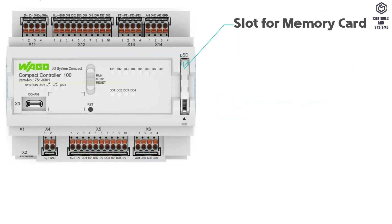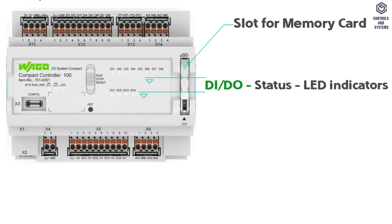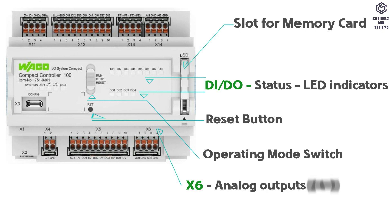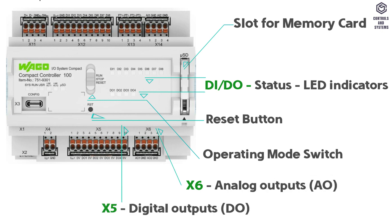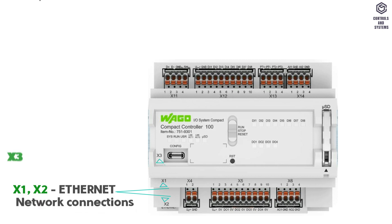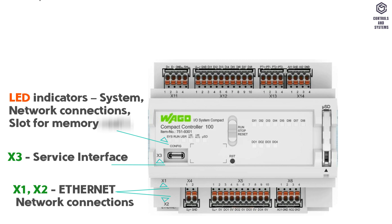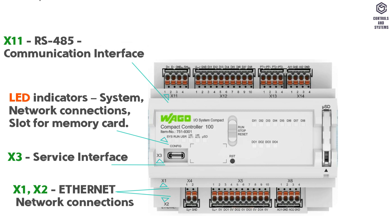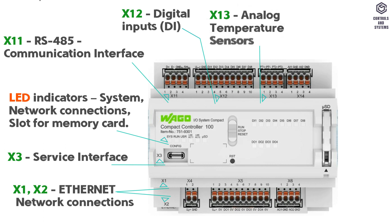Display and port layout: There is a slot for a memory card. Digital input and digital output status LED indicators are present, along with an operating mode switch and reset button. X6 is analog outputs. X5 is digital outputs. X4 is system supply voltage. X1 and X2 are Ethernet network connections. X3 is service interface. LED indicators are also present. X11 is RS-485 communication interface. X12 is digital inputs. X13 is analog temperature sensors. X14 is analog inputs.